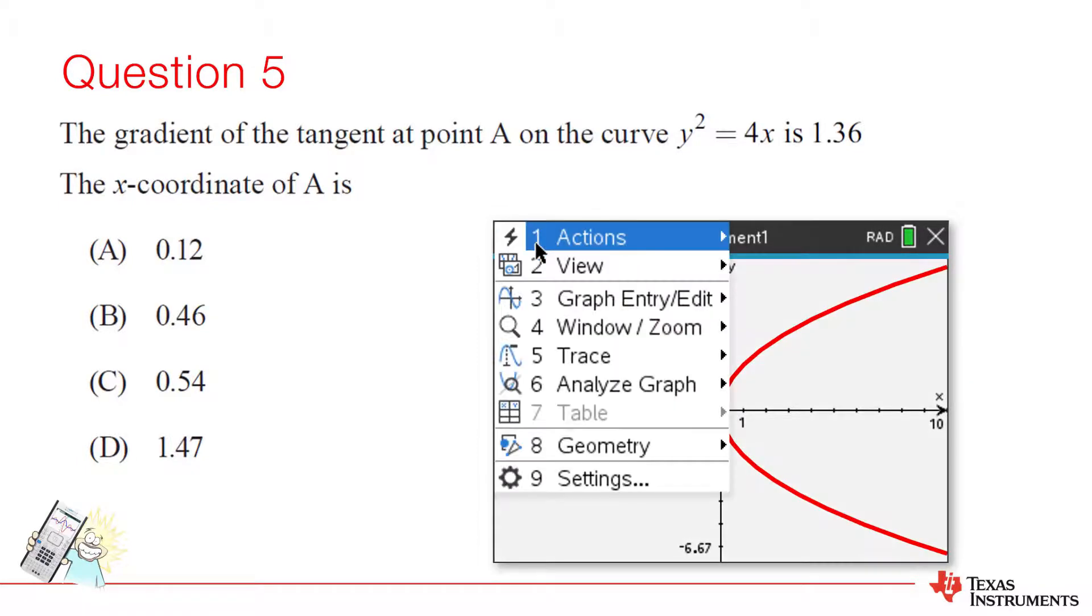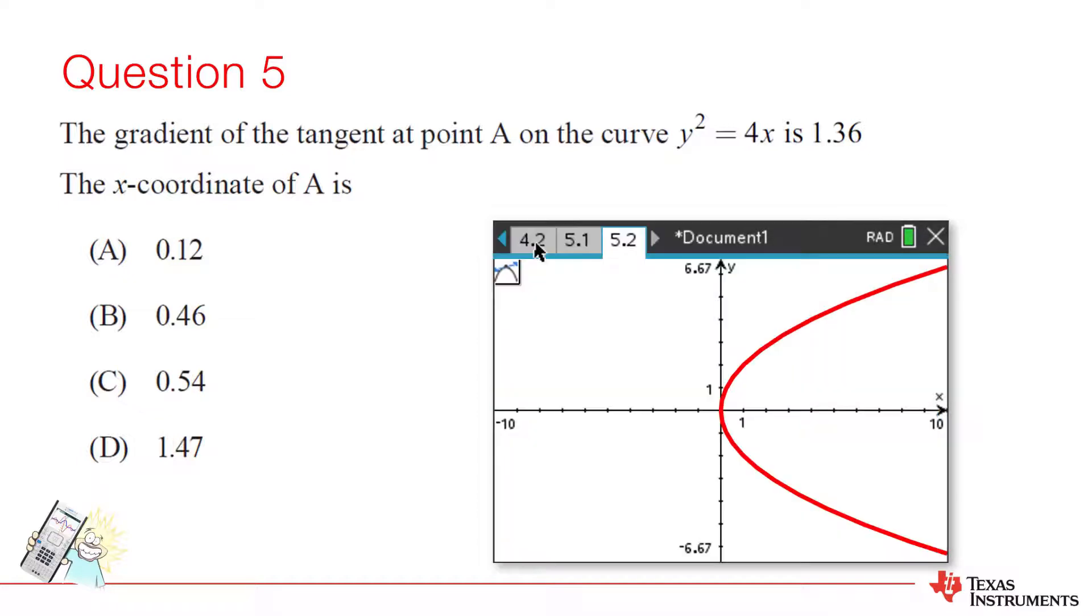Another option for this problem is to graph the relation. Then, draw a tangent. Once you've drawn the tangent, display the coordinates of the point where the tangent touches the curve. Then move the tangent until the gradient is approximately 1.36. And so we find the answer is option C.